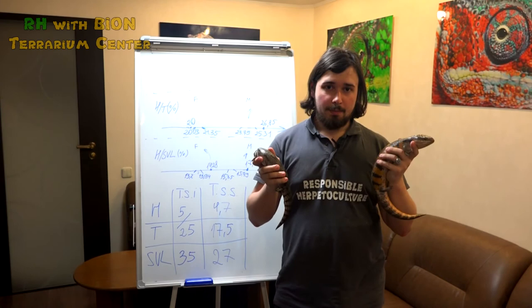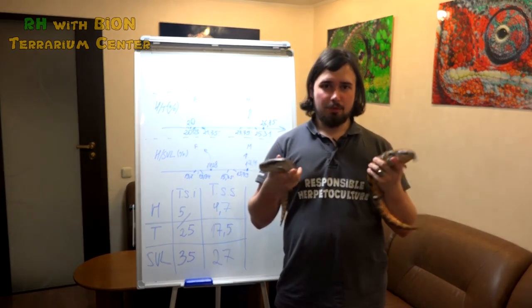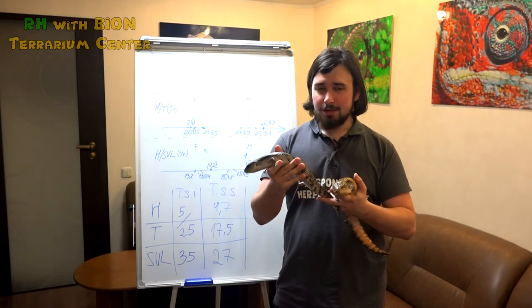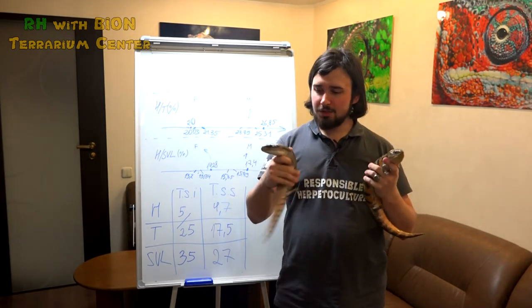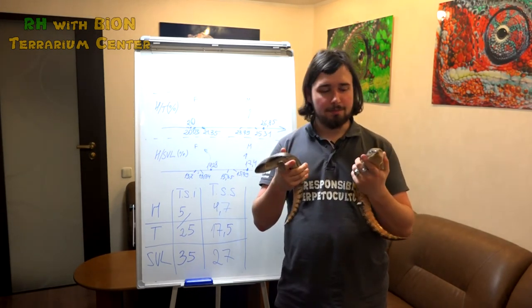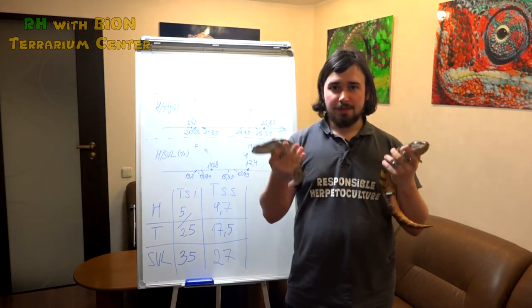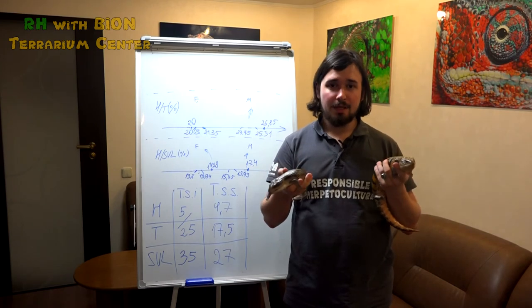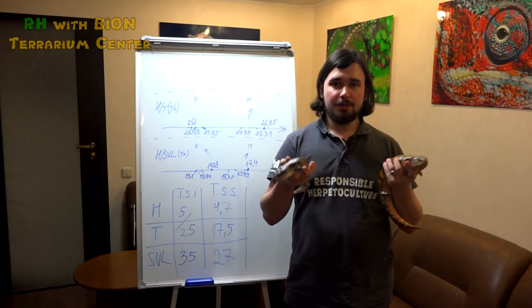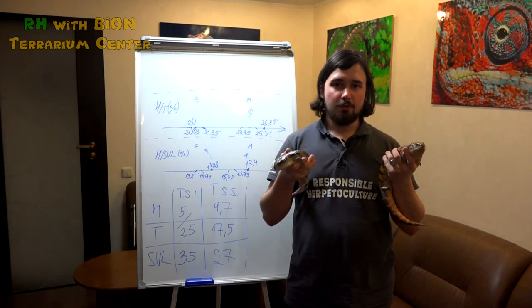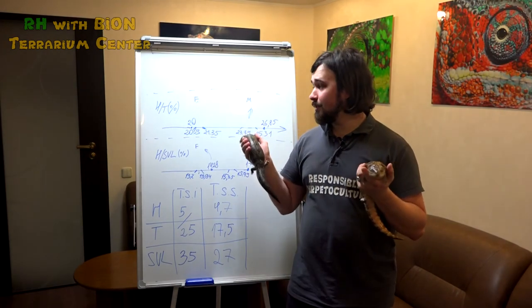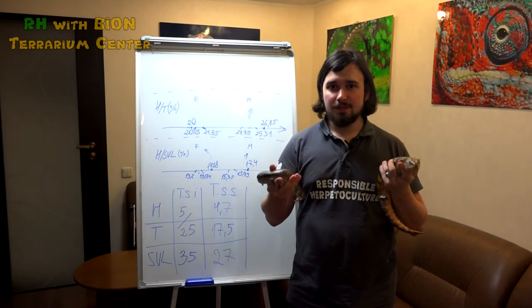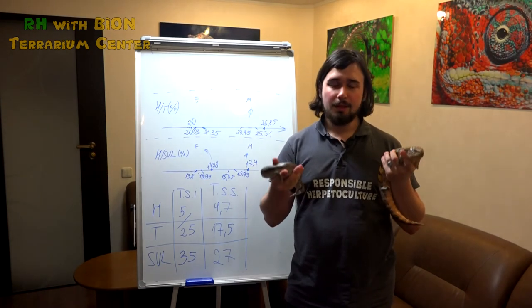What happened? Basically, when an experienced keeper looks at the animal, his eyes and his brain somehow measure the proportions of these different distances. And based on this and based on his or her experience, the keeper or breeder can tell whether this is a male or a female. But this method helps us to learn how to do it using simple mathematics and simple measurements.